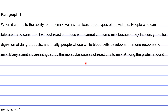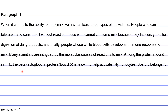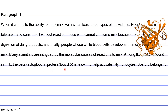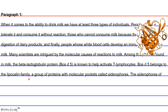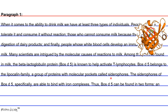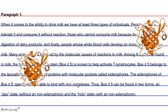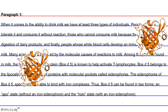Many scientists are intrigued by the molecular causes of reactions to milk. Among the proteins found in milk, the beta-lactoglobulin protein BOS D5 is known to help activate T lymphocytes. BOS D5 belongs to the lipocalin family, a group of proteins with molecular pockets called siderophores. The siderophores of BOS D5 specifically are able to bind with iron complexes. Thus, BOS D5 can be found in two forms: an apo state without an iron siderophore, and a holo state with an iron siderophore.